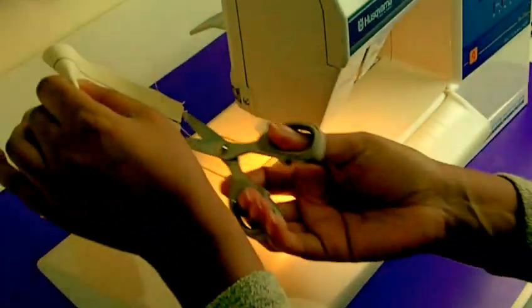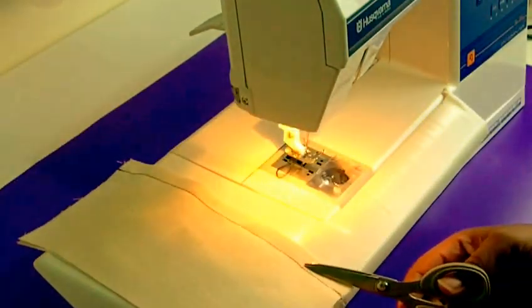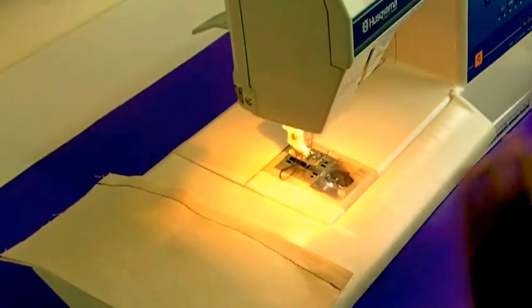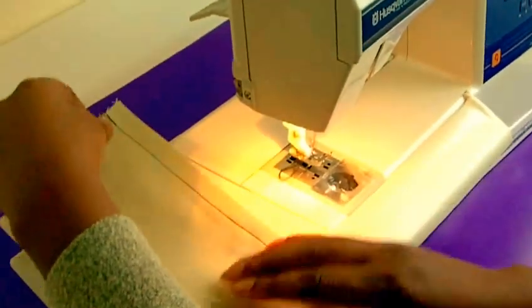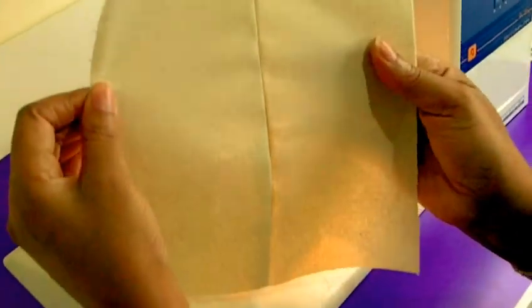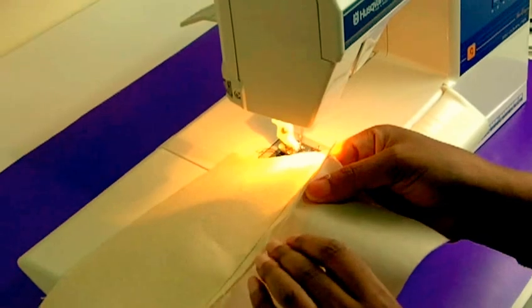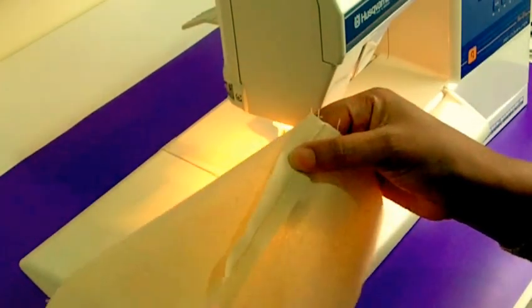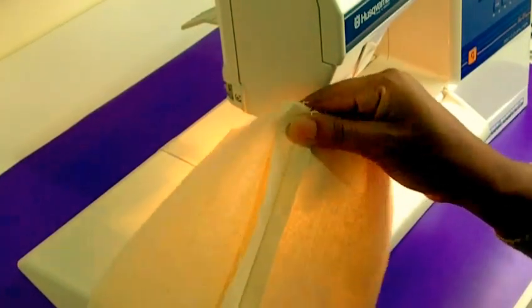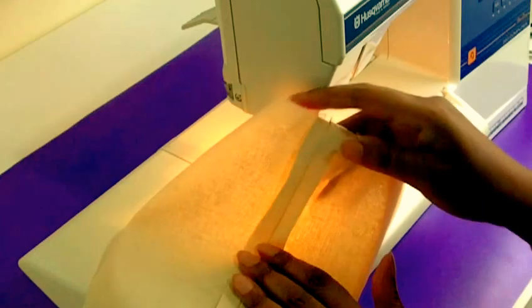There we go, there's your plain seam. Remember this is the wrong side of the garment, that's the right side of the garment. Then you would press that open and then neaten whichever way you prefer to do.